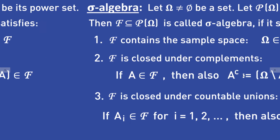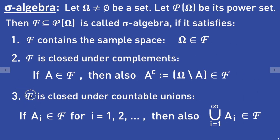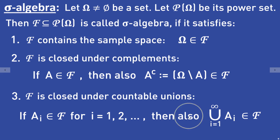Property 3: F is closed under countable unions. That means if the sets Aᵢ are in F, for i equal to 1, 2, and so on, then the countable union of these sets is also an element of F.